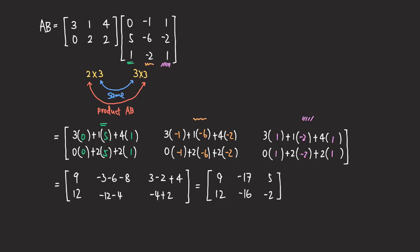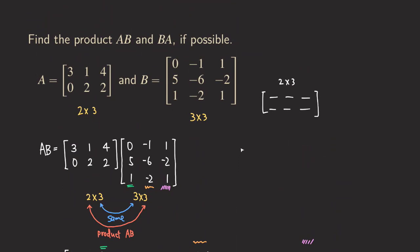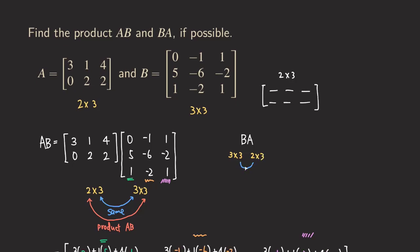Now what about BA? If we try BA, B is 3 by 3 and A is 2 by 3. The inner numbers are 3 and 2, which are not the same. Because the inner numbers are not the same, we will not be able to multiply B by A. So BA is not possible. That's it for this video — thank you for watching. If you like this video, please subscribe and give it a like. Thank you, and I'll see you next time.